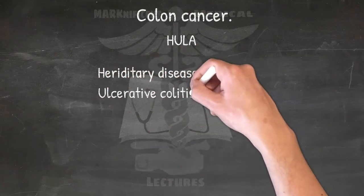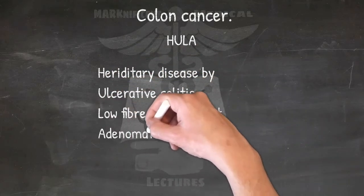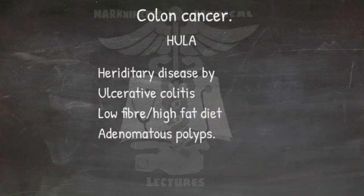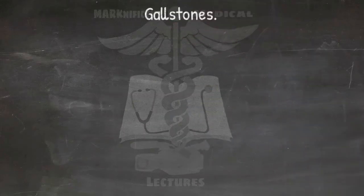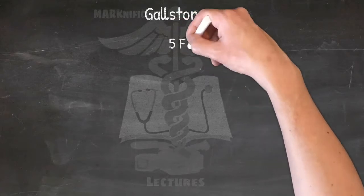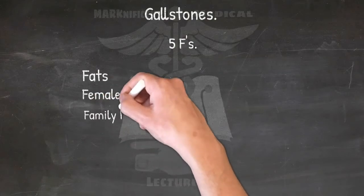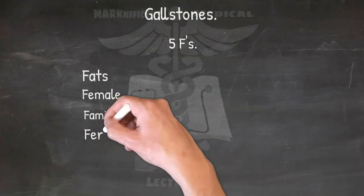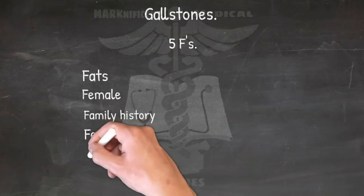Risk factors of gallstones: the five F's. Due to Fats, it is predominant in the Female sex, can be traced down through Family history, it is termed Fertile, and manifests from age Forty.